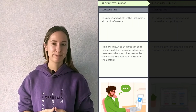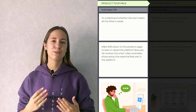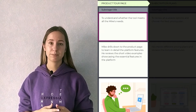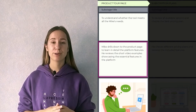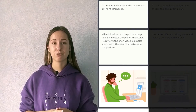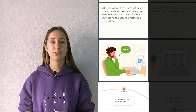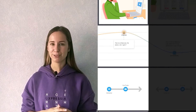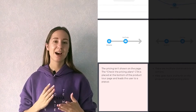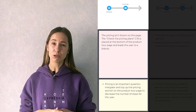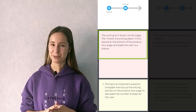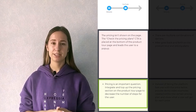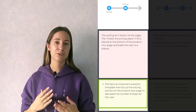Let's talk about checking out the product tour page since it's one of the most important stages. For our persona, the goal at this point is to understand whether the tool meets all his needs. Mike drills down to the product tour page to learn about all the features of the platform in detail and reviews short video examples showcasing the essential features. Mike feels excited because of the number of features, but the pricing is not very clear and that's annoying. The 'check the pricing plans' CTA is also misleading – that's a problem to note. In the idea section, we can offer to integrate and top up the pricing section on the product tour page to decrease the number of steps for the user.